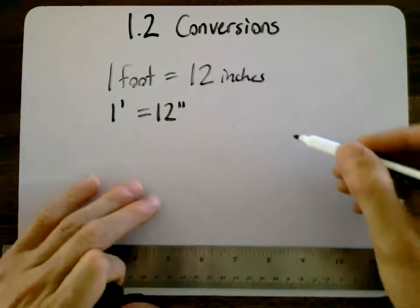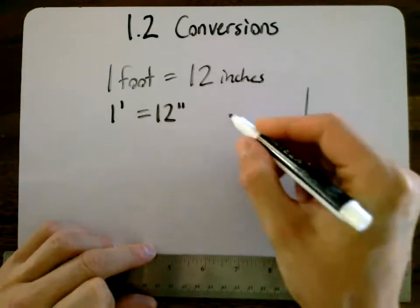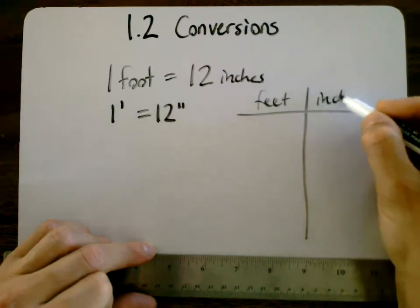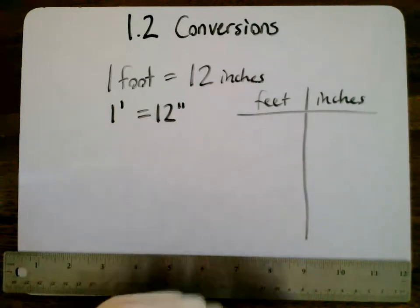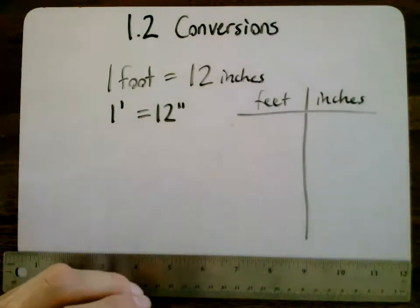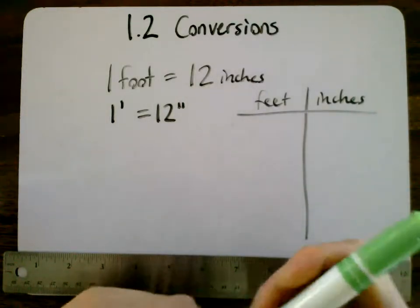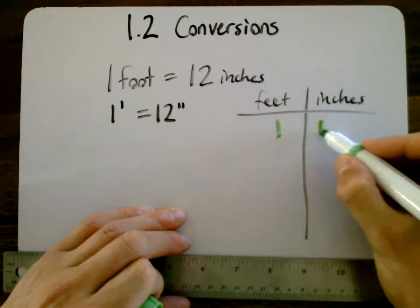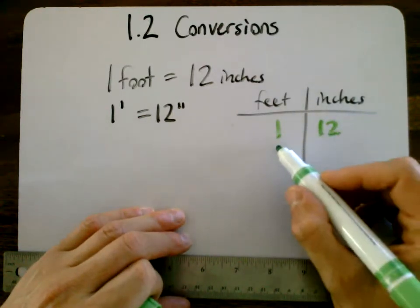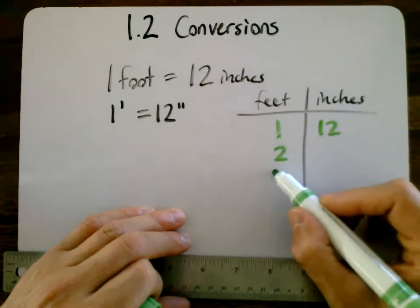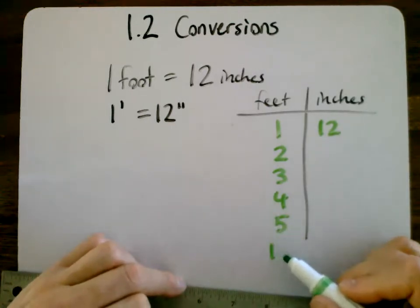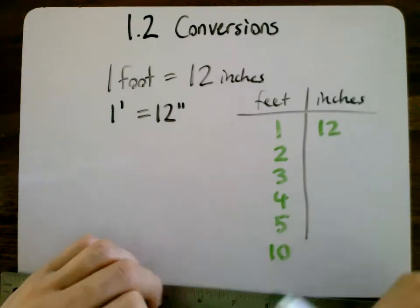Let's make a little table here, and this is going to be feet, and this is going to be inches. And I want you to try to fill this out. I'm going to get us started here, so we know that one foot is 12 inches. I'm going to do two, three, four, five, and then I'm going to challenge you with a ten.